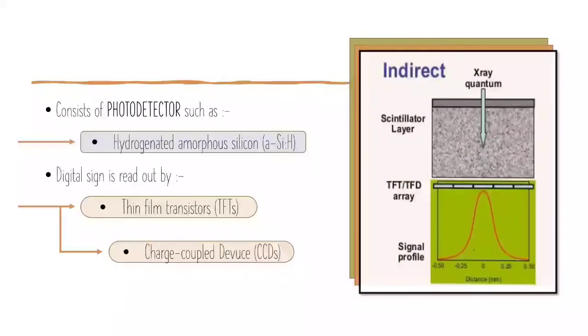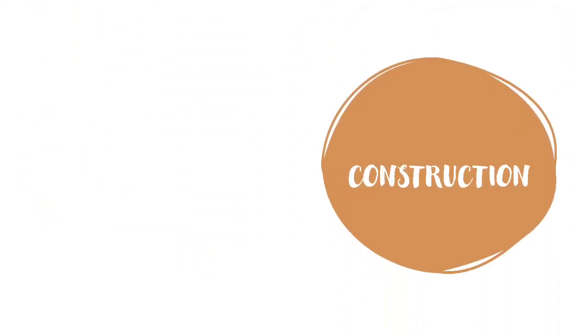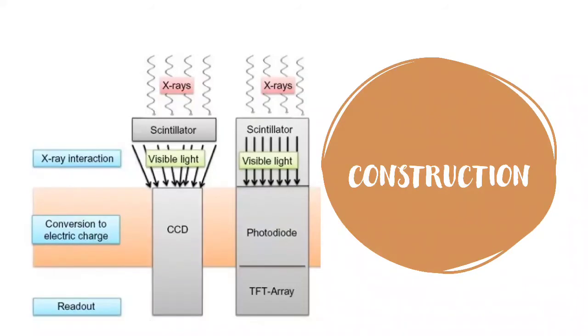The digital signal is read out by thin film transistors, TFTs, or charge-coupled devices, CCDs. Now this is the difference between structured and unstructured: As we can see from the diagram, unstructured indirect flat panel systems use CCDs, while structured uses TFTs.